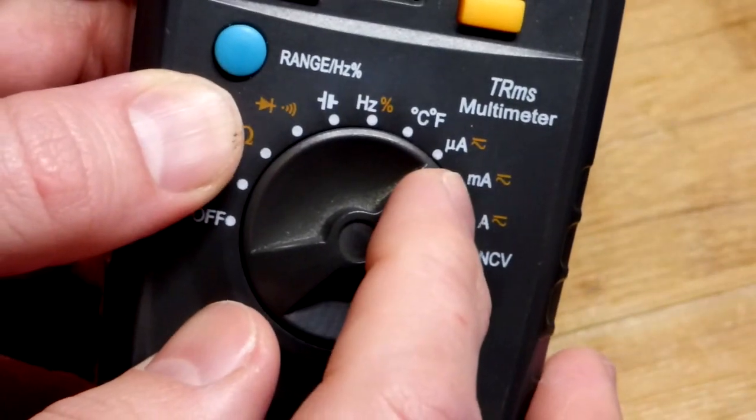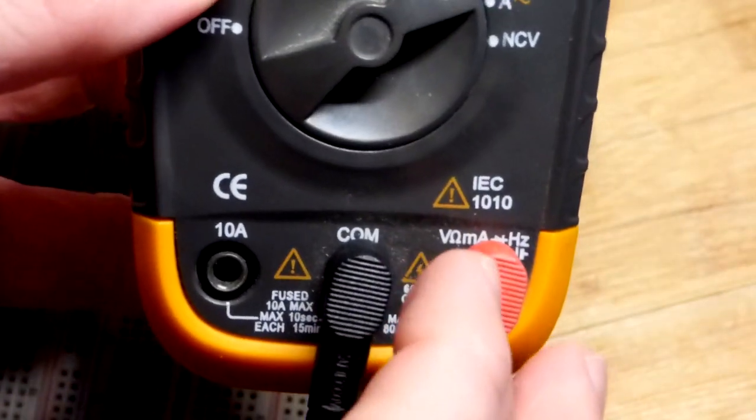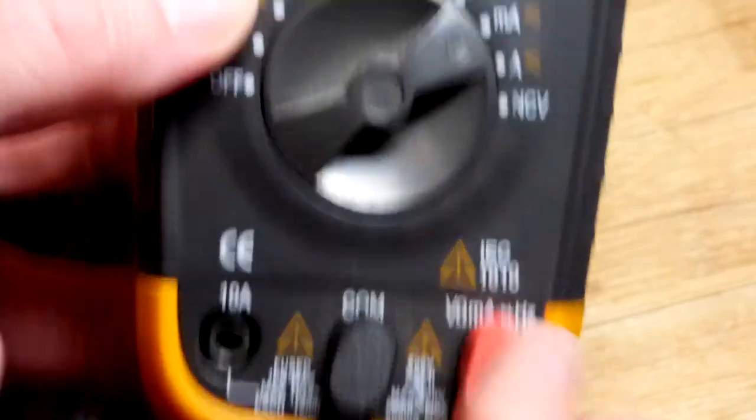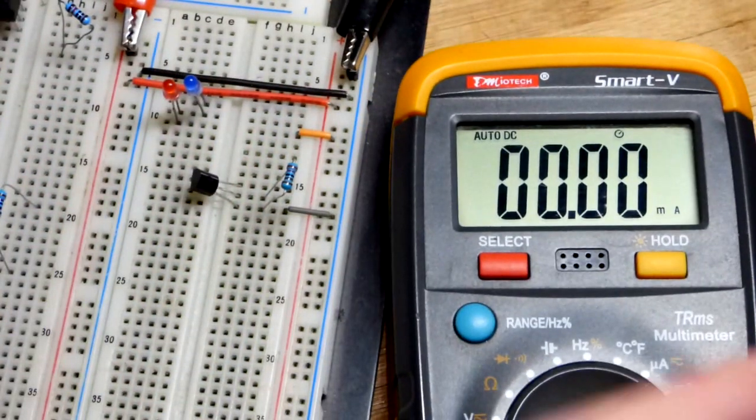So we're setting the meter to milliamps. If you have a meter with numbers, you set it to a number higher than you can expect to measure. And we got the red probe where it says milliamps right there. We don't have to move it for this meter.